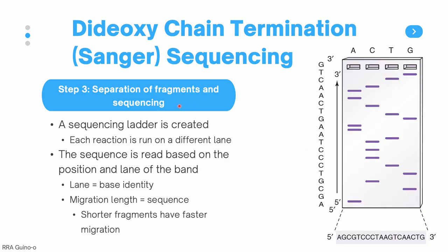The last step in Sanger sequencing is the separation of fragments and the actual sequencing. A sequencing ladder is first created using polyacrylamide gel electrophoresis, similar to chemical sequencing. Each reaction is run on a different lane, and since we know each reaction contains a specific ddNTP, we can associate bands in each lane with a specific nucleotide base. The lane tells us the base identity, and the migration length tells us the nucleotide position in the sequence.